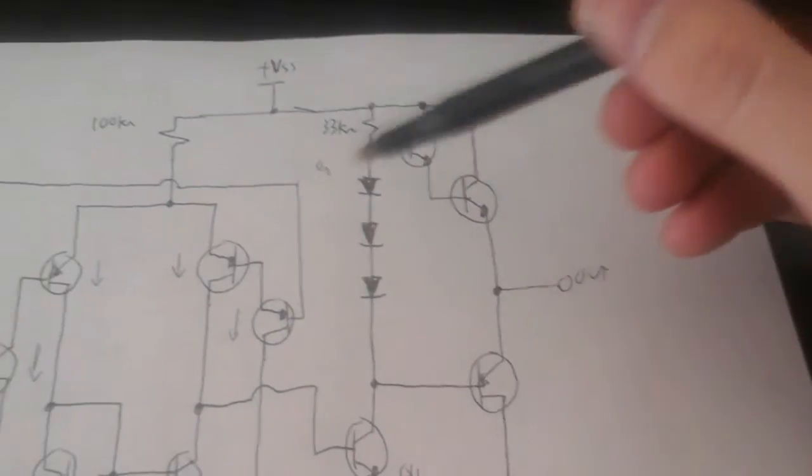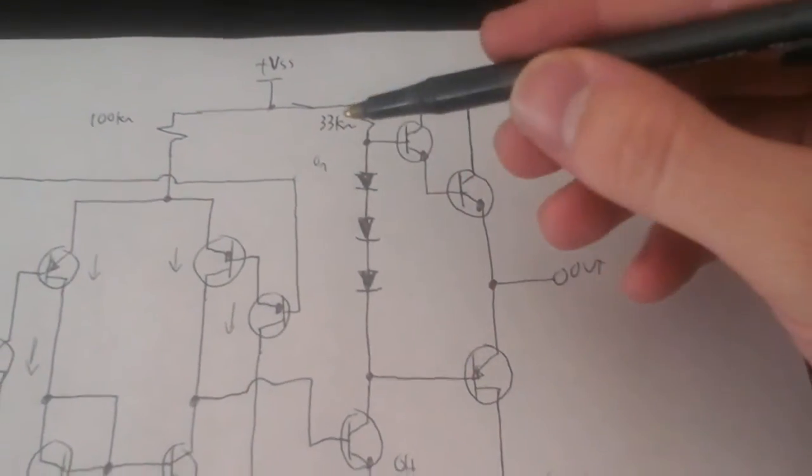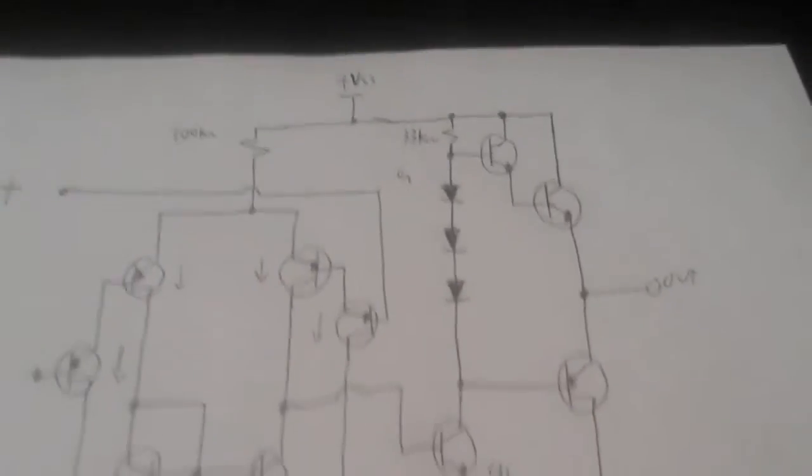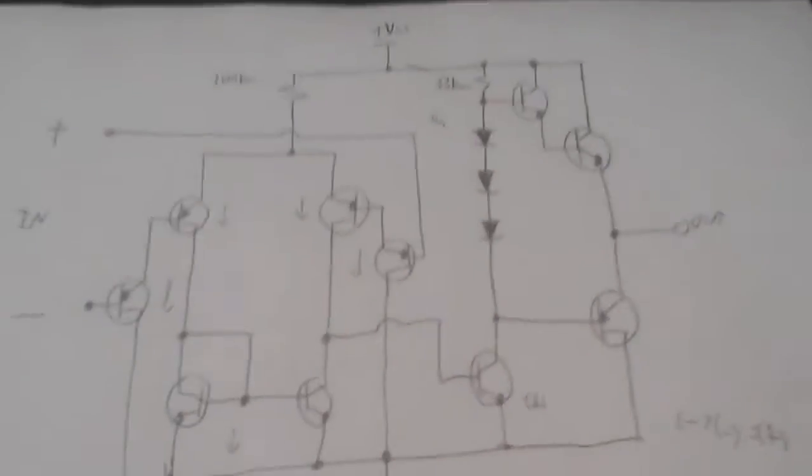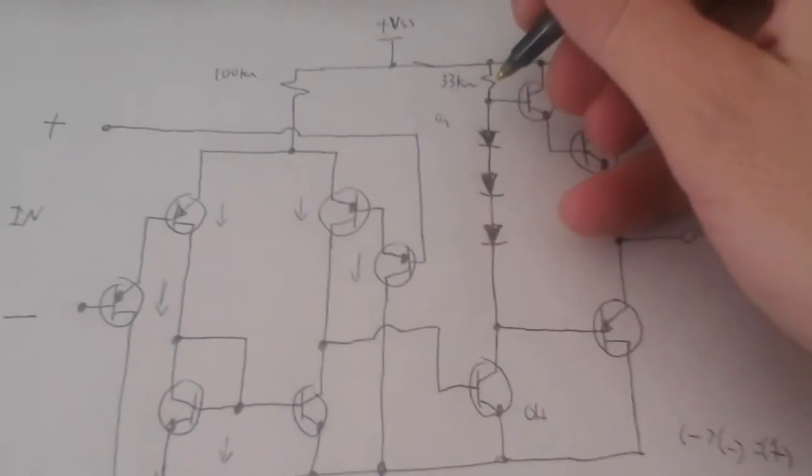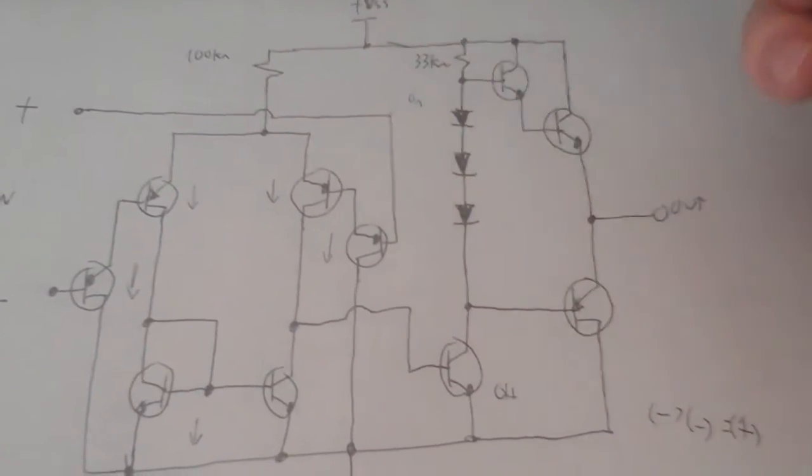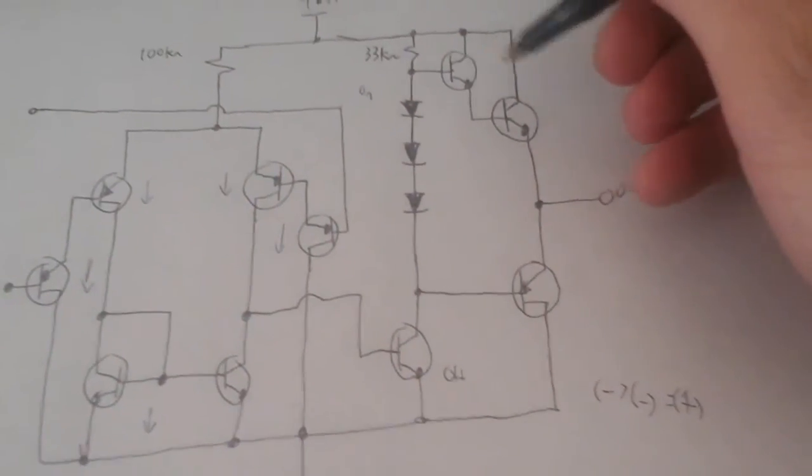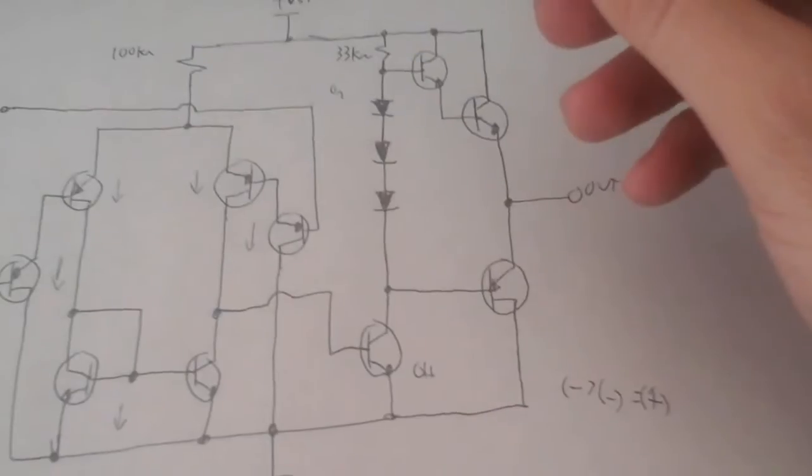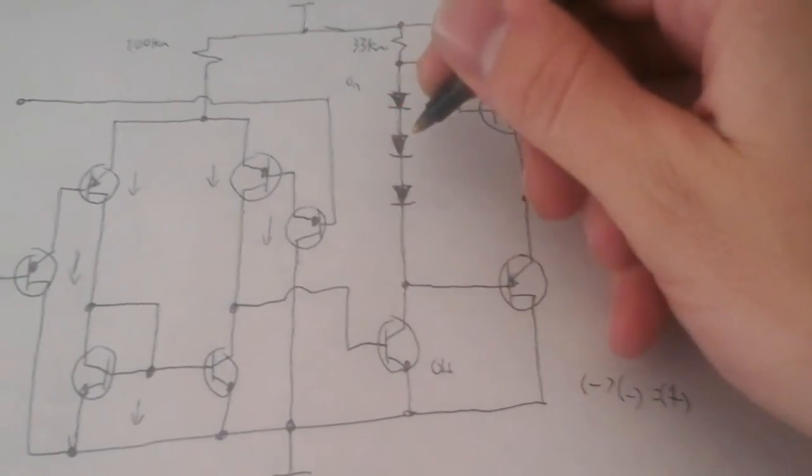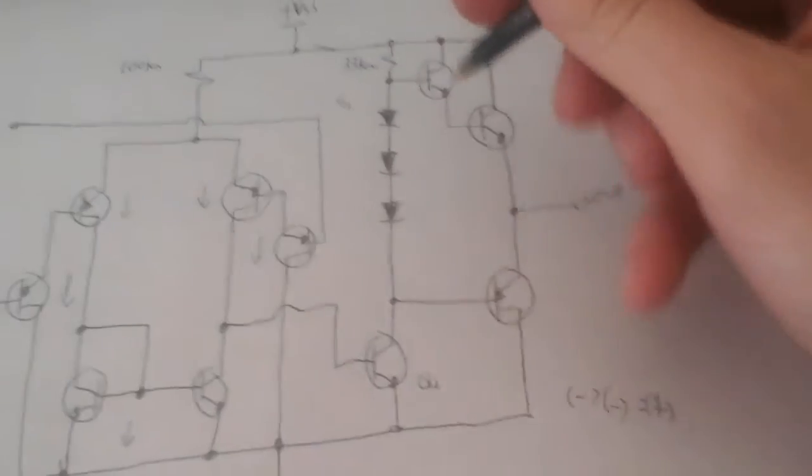Because you got the, by the way, I didn't use current mirrors on this. It's non-regulated amperage, which means depends on the voltage, it changes the amperage. But this is the output right here. And these diodes right here are equivalent to these transistors, semi-conductors.